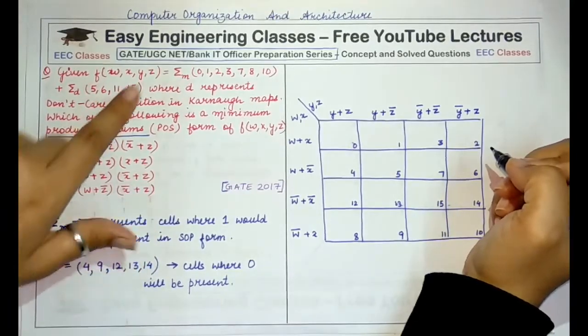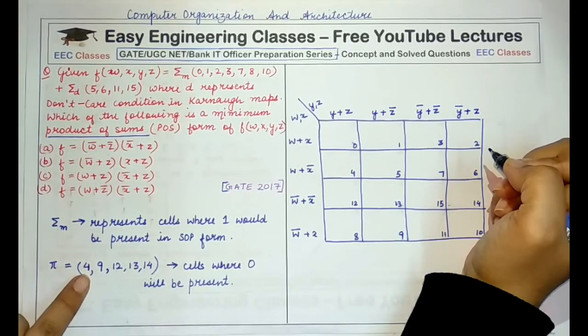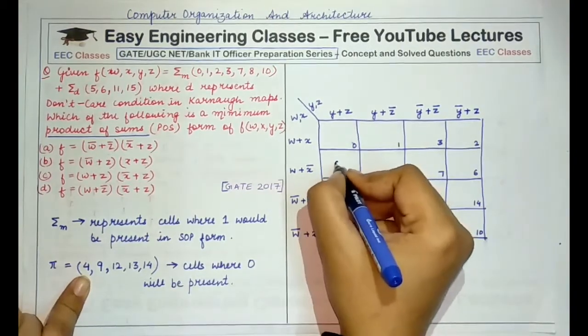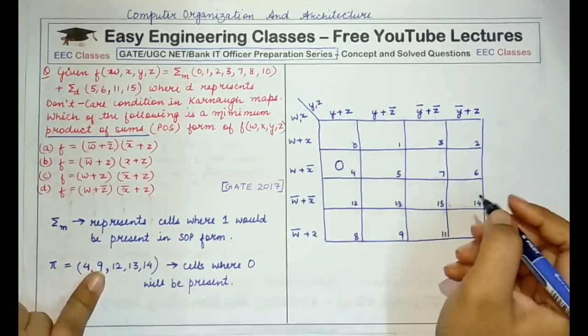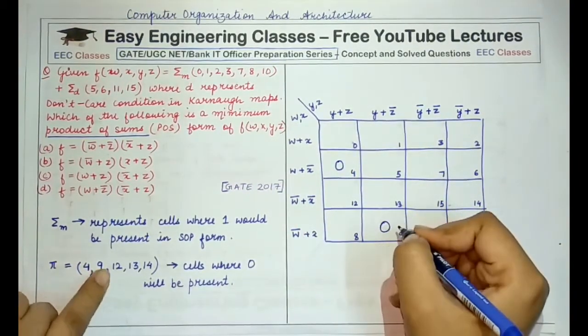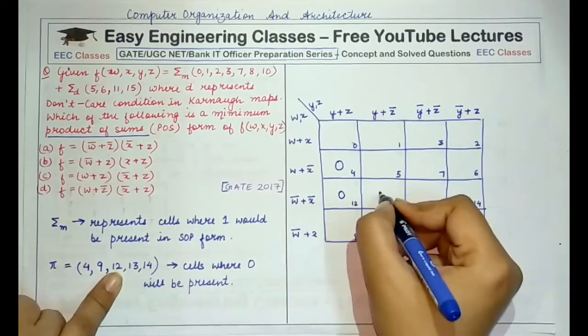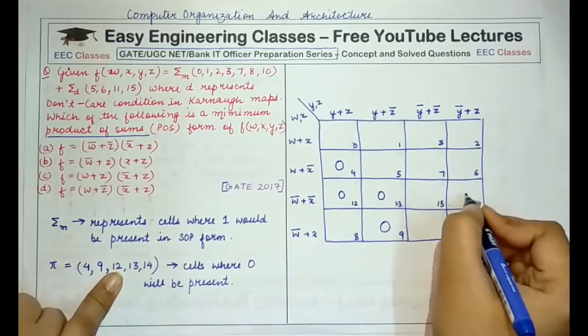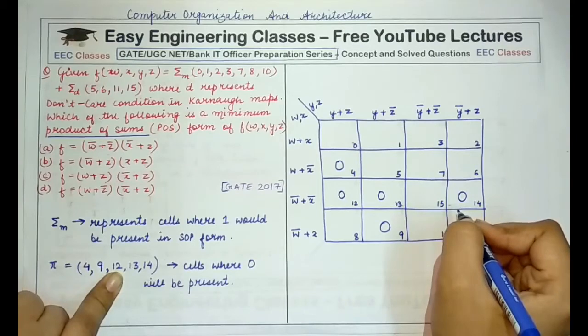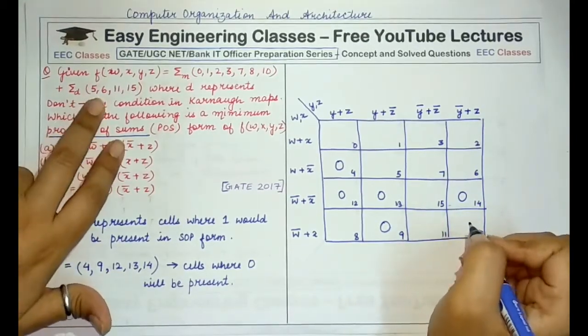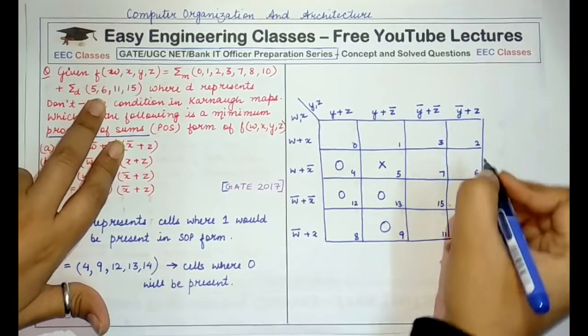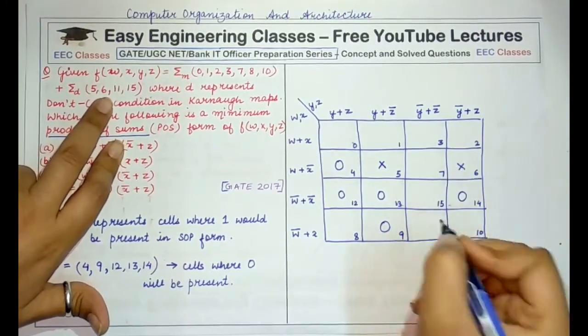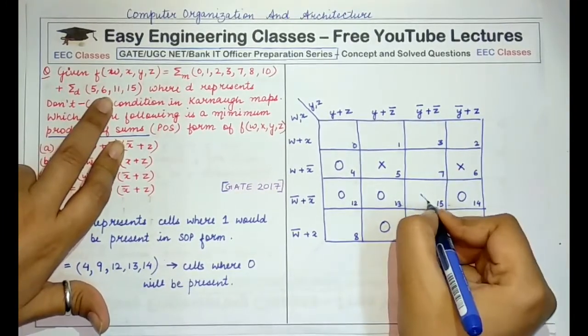We know that the places where 0 would be present are 4, so 0 would be present at 4, then 9, 0 at 9, then 12, 13, and 14. And the don't care terms are present at 5, 6, 11, and 15.